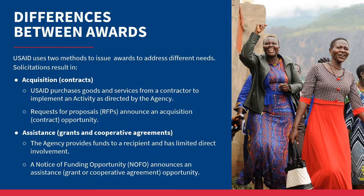In an acquisition contract, USAID purchases goods and services from a contractor to implement an activity as directed by the agency. Acquisition means obtaining or acquiring goods and services. With this type of award, the U.S. government is an involved buyer. Applicants interested in acquisition awards must submit a proposal in response to a solicitation called a Request for Proposals, or RFP.